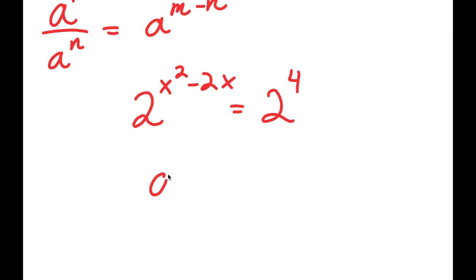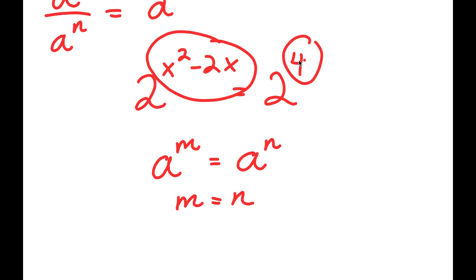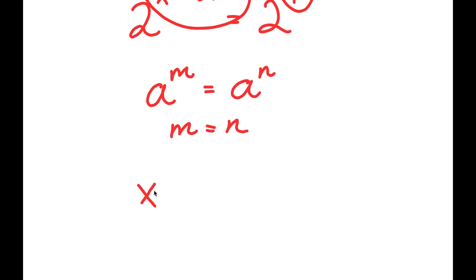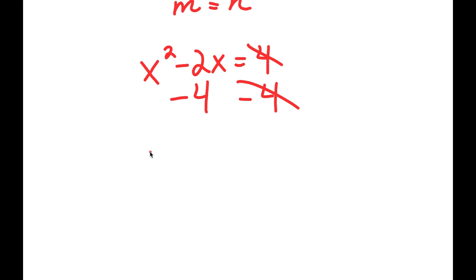Now, if I have something in the form a to the power of m is equal to a to the power of n, this means that m is equal to n. So in this case, m is x squared minus 2x and n is 4, so I get x squared minus 2x is equal to 4. And if I subtract 4 on both sides, I get x squared minus 2x minus 4 is equal to 0.